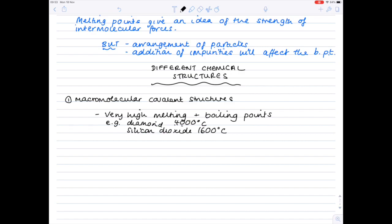For example, diamond which melts at approximately 4,000 degrees. Silicon dioxide melts at around 1,600 degrees Celsius. Don't forget the second allotrope of carbon so you've got diamond as being one of them but also graphite which also melts at approximately 4,000 degrees so extremely high melting points here. Why is that?